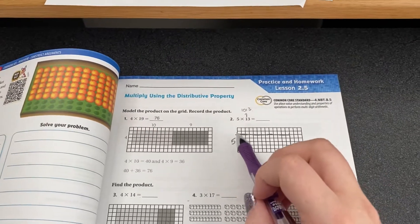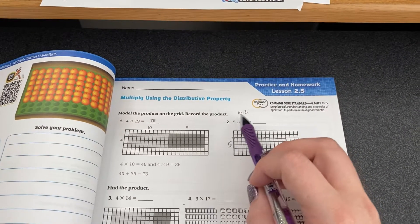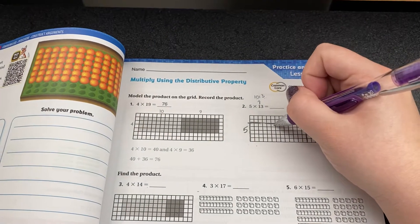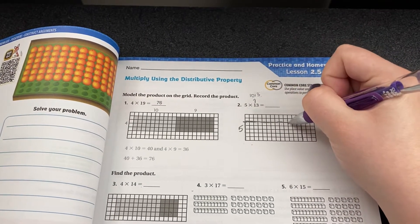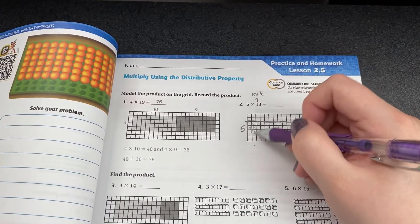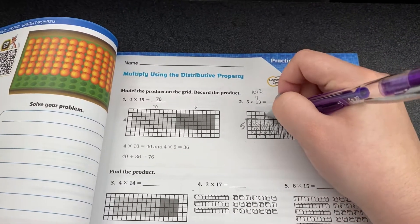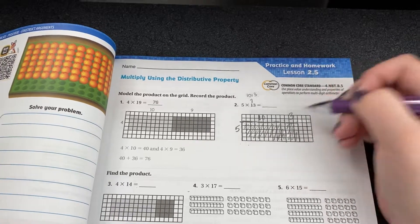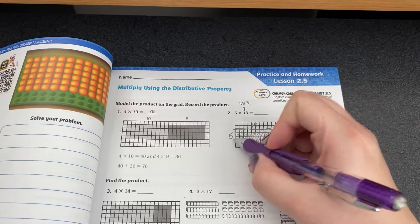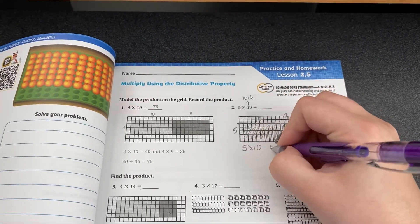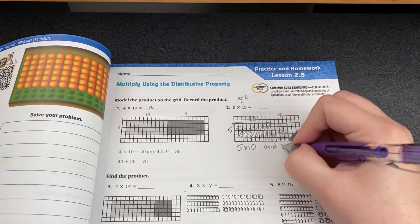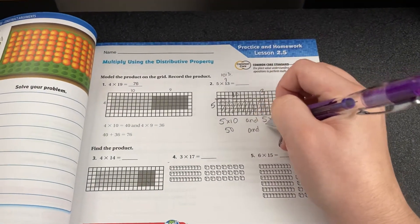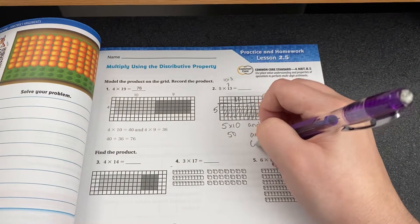So instead of trying to figure out what five times thirteen is, I'm going to split it into easier bite-sized pieces. I'm going to do a group of ten and a group of three. That's five times ten, and these ones are five times three. Five groups of three, five groups of ten. Five times ten is fifty, and five times three is fifteen. Fifty plus fifteen is sixty-five.